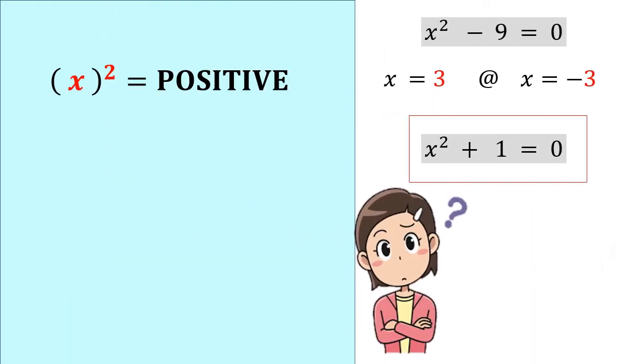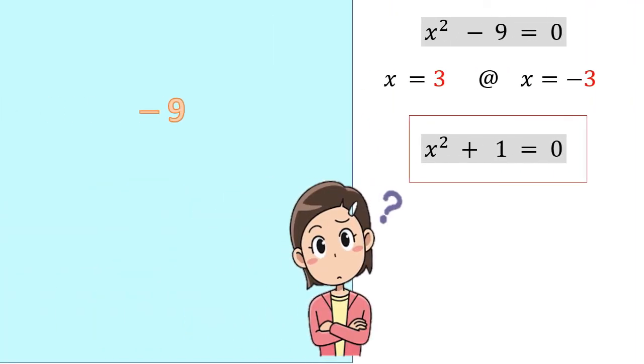Let us understand the equations now. Whenever we consider the square of a number, say x, the result is always positive. Whether the number x is a positive real number or a negative real number, we always get a positive result. And we have learned that a negative number does not have a square root. So if we have a number like negative 9, we say that its square root does not exist.